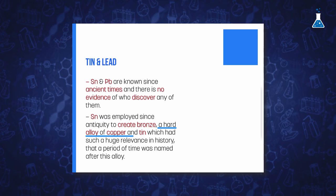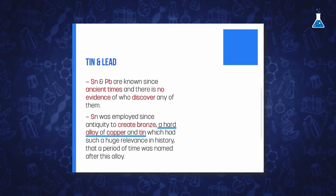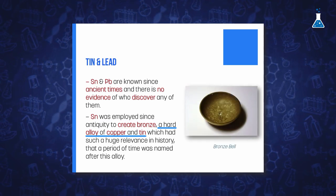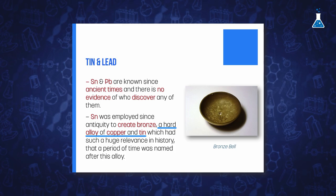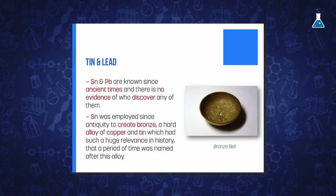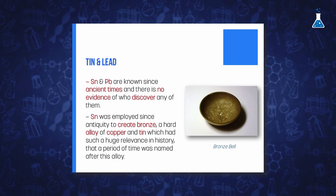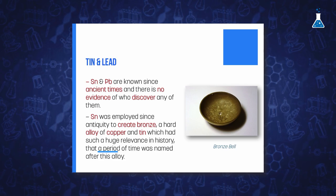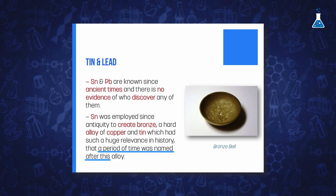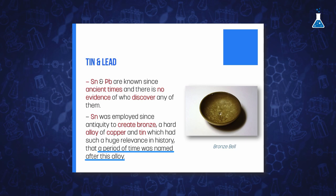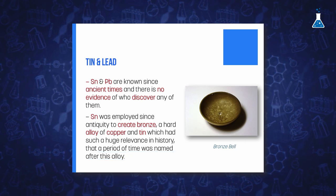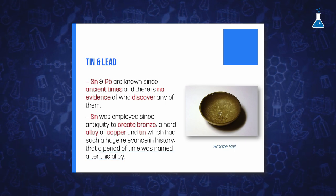The importance of tin in antiquity is related with the fact that this element was employed to create bronze, a hard alloy of copper and tin, which enabled people to create artifacts harder and more durable than previous tools employed. The relevance of bronze in history is such that a whole historical period was named after this alloy, the Bronze Age, which is dated from the third millennium before Christ.